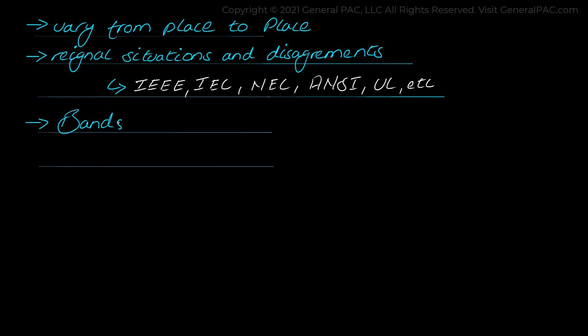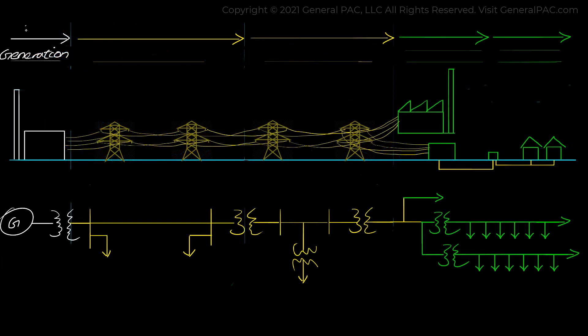We will follow two most widely used standards in this video which are the American standard with 60 Hz and the European standard with 50 Hz frequency of voltage cycles. Now the voltage levels for which electricity is generated depends